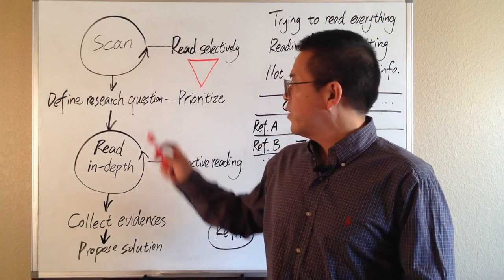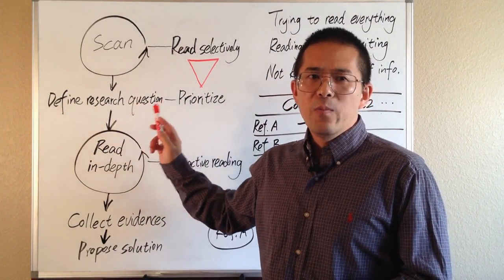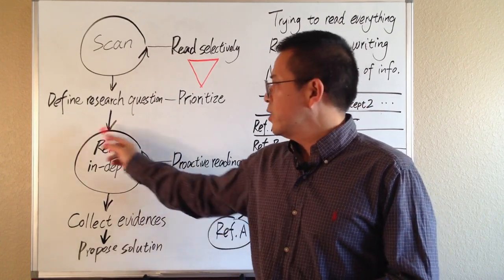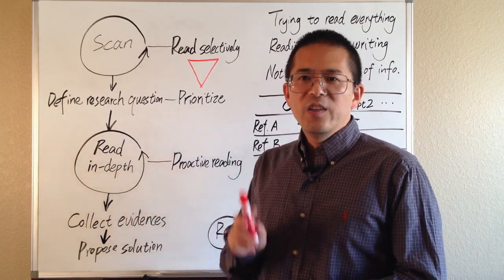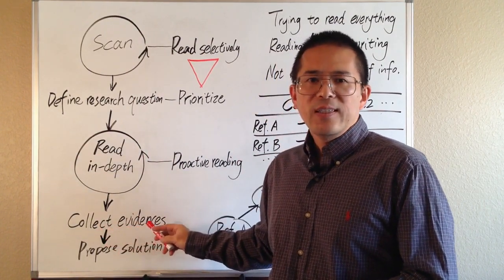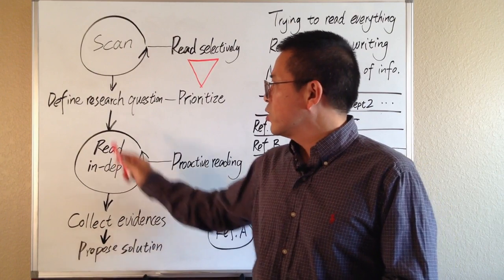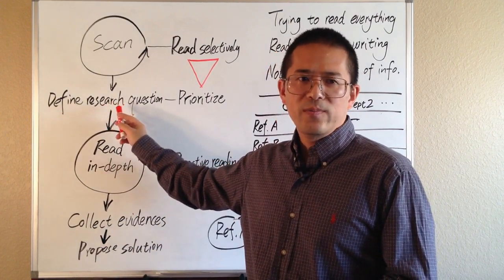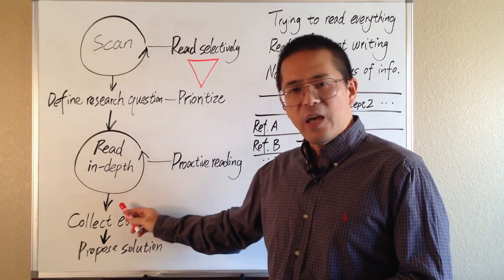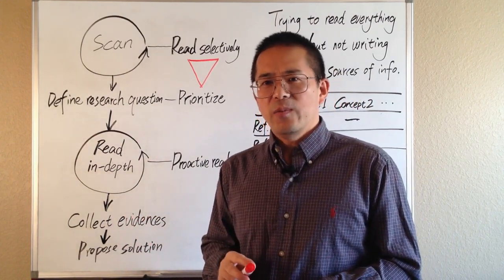Once you have a well-defined research question, you will be able to do a more focused and intensive reading. You enter the second cycle. In this cycle, your main job is to collect the evidence that are available in the current literature to answer the defined research question. In order to be able to analyze and synthesize this evidence in your review, you will want to obtain an in-depth understanding of them.